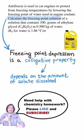Freezing point depression is a colligative property, a property that depends on the amount of solute dissolved in a solution. In this case, ethylene glycol is dissolved to lower the freezing point of water.